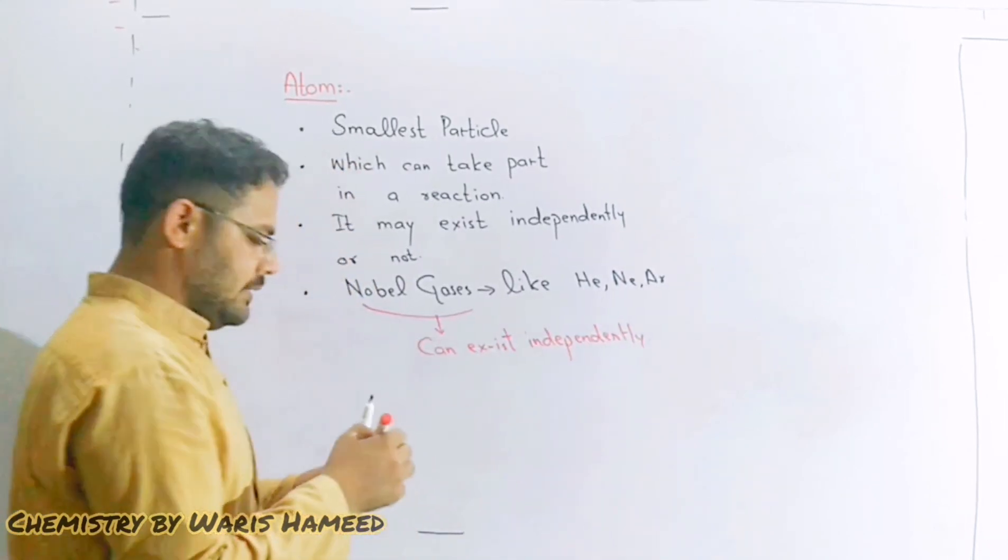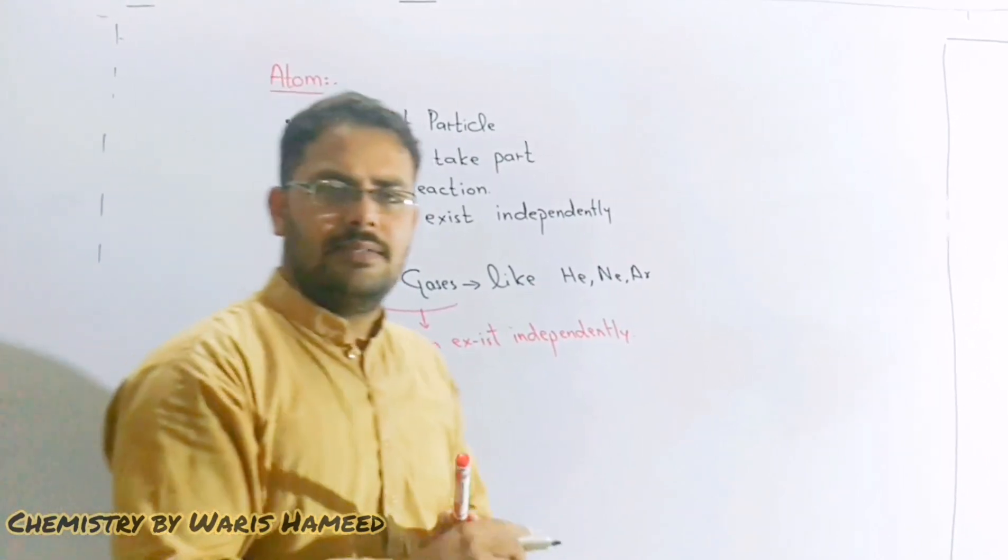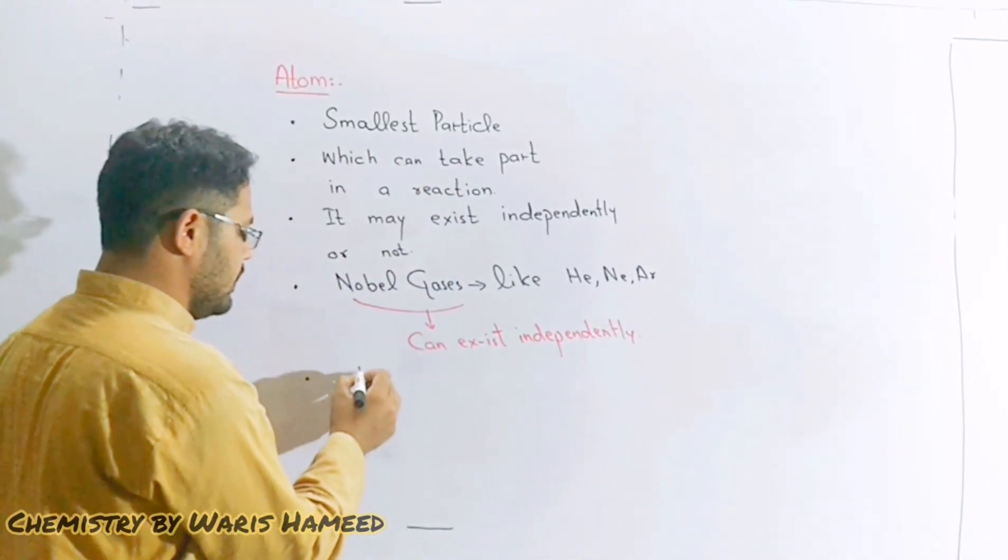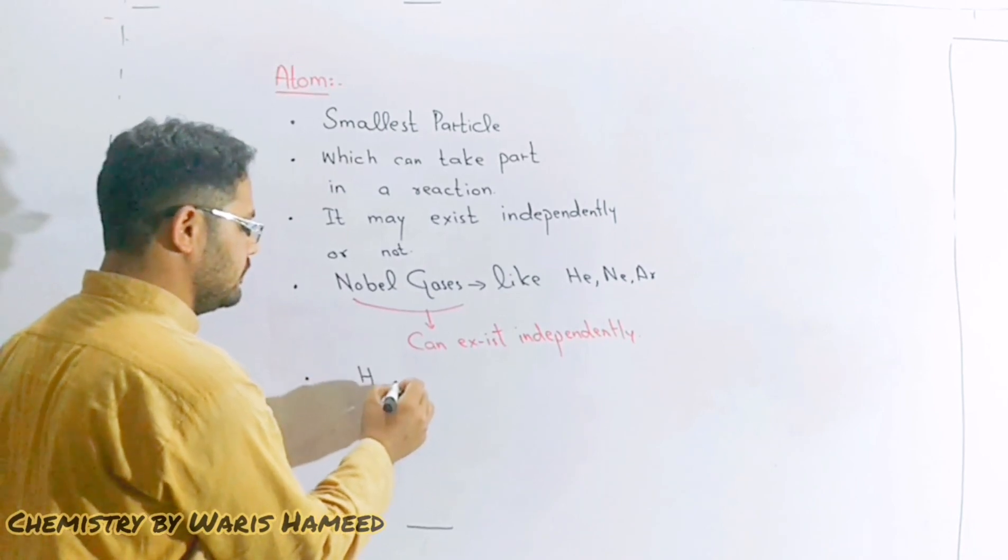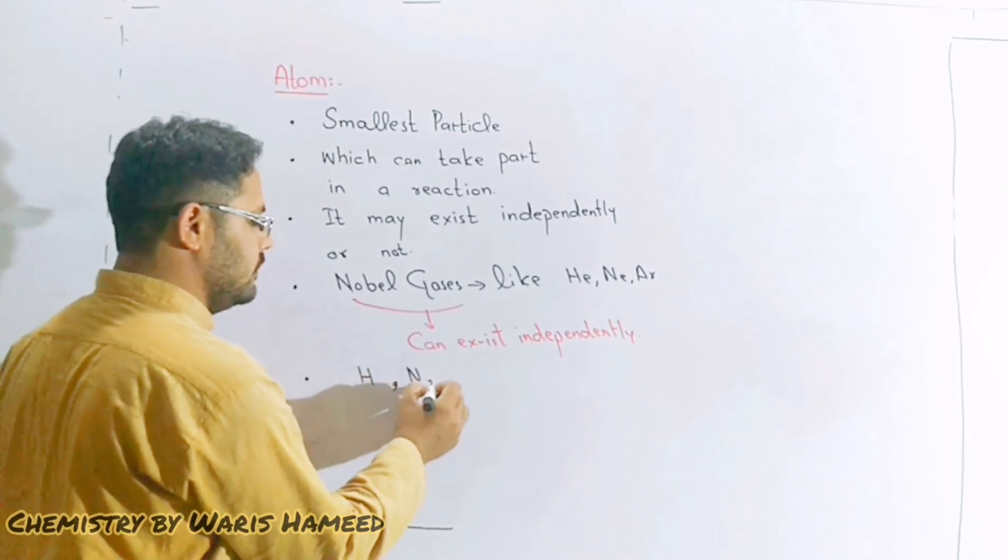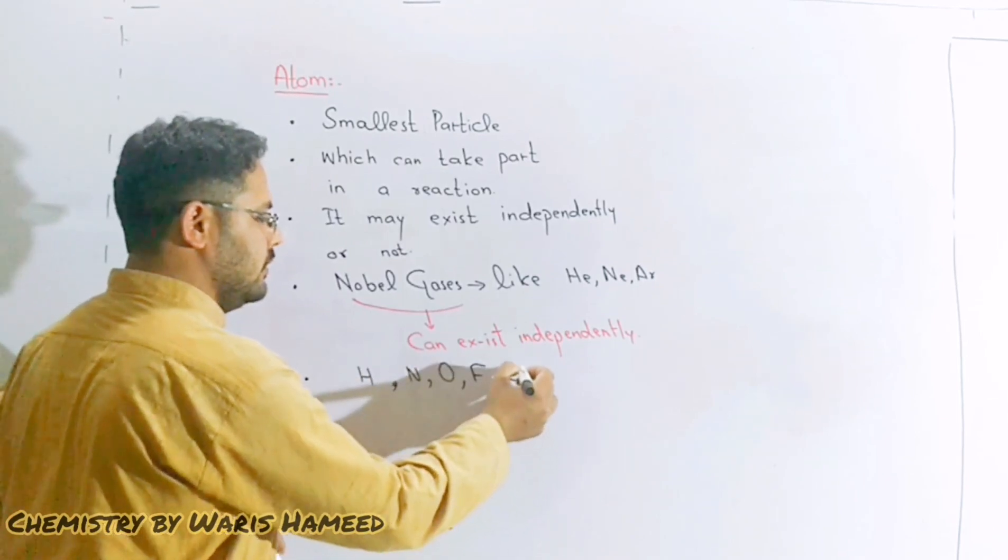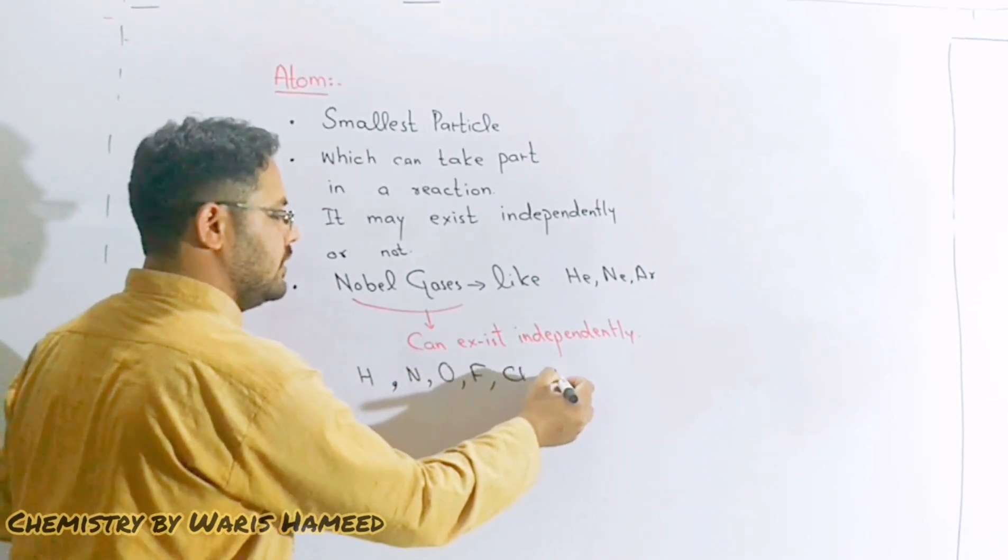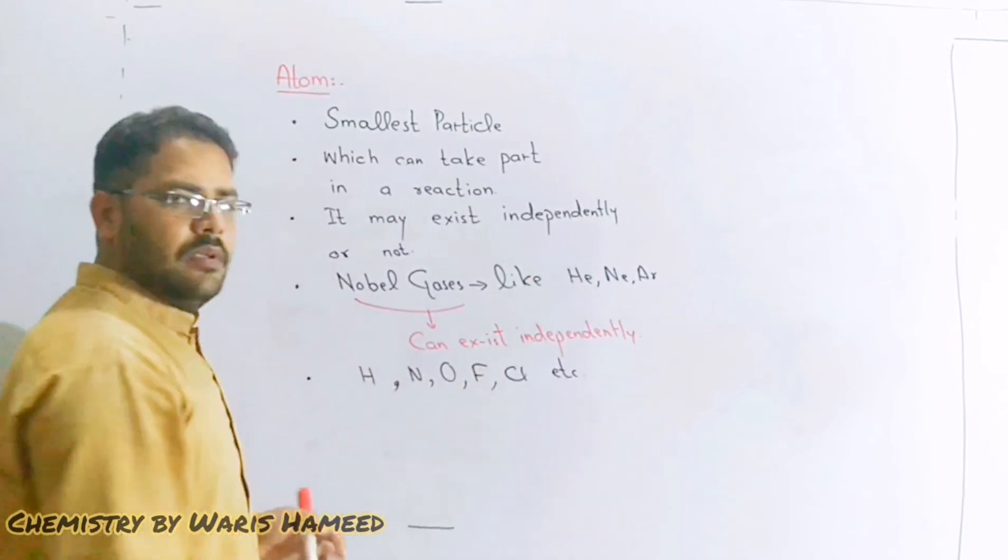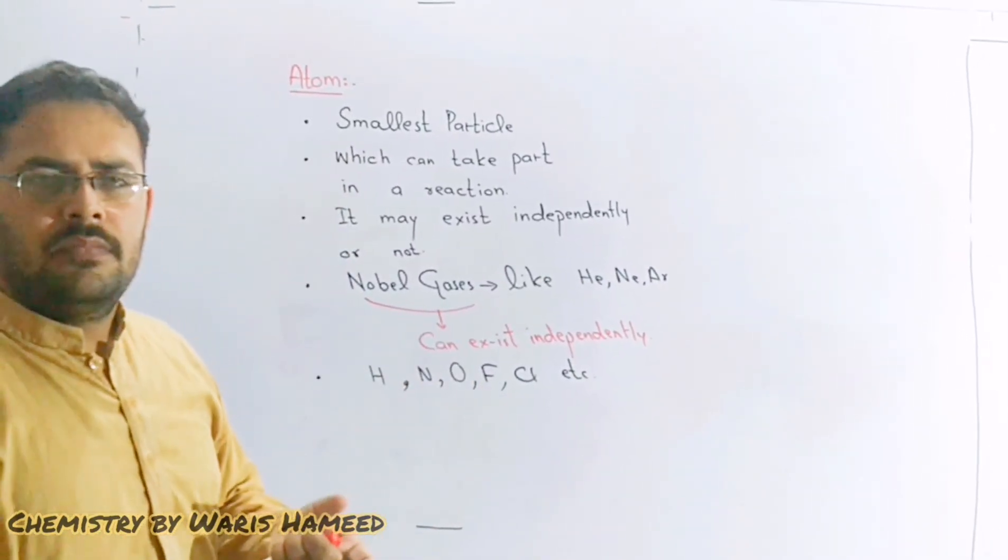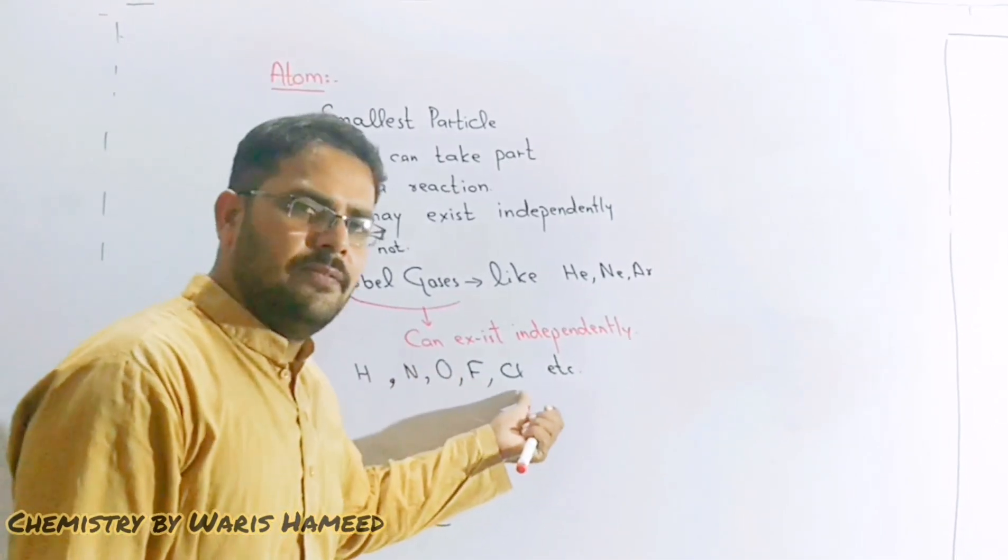All other atoms cannot exist independently like hydrogen, nitrogen, oxygen, fluorine and so on. These atoms should make bonds with other atoms. That other atom may be itself or another atom.